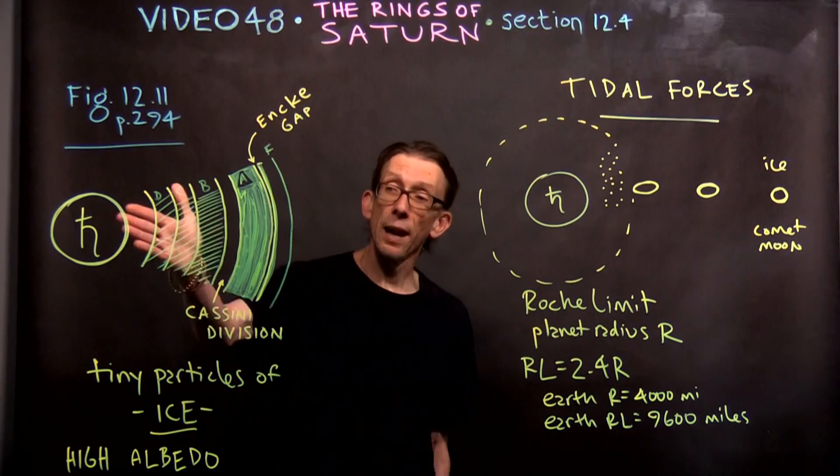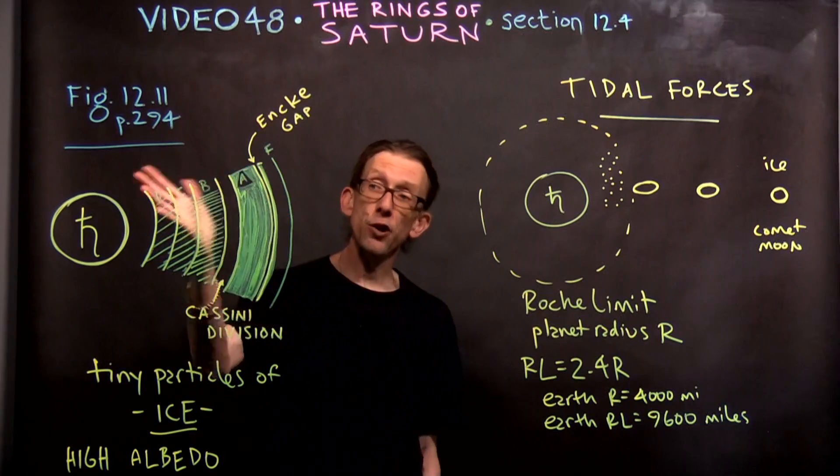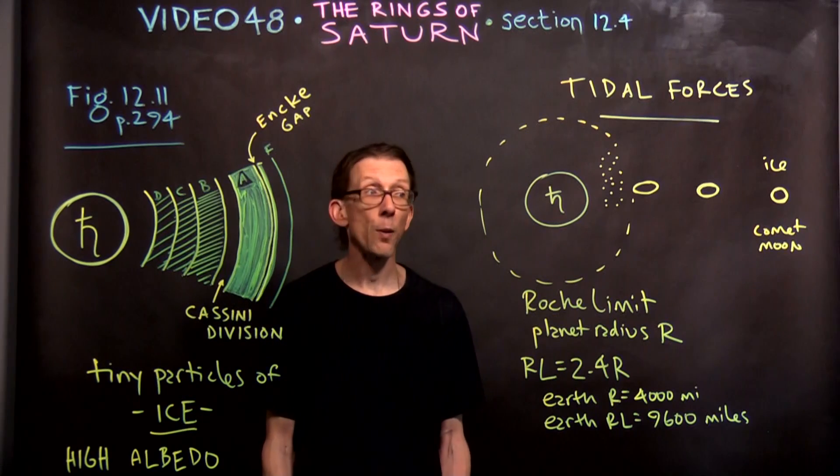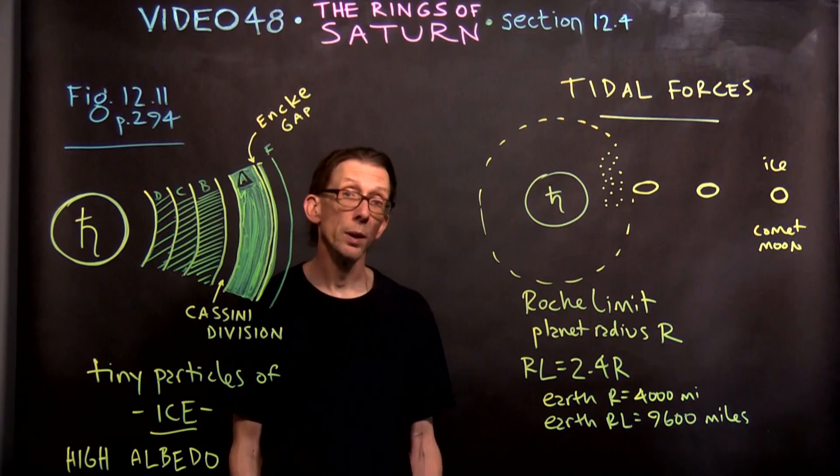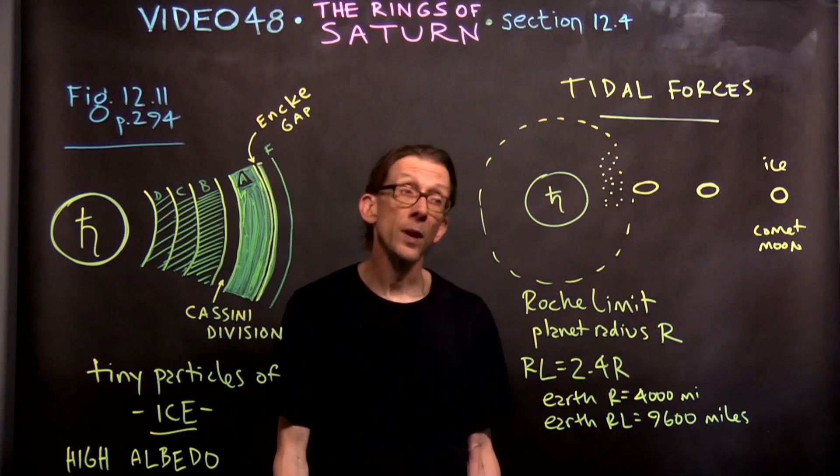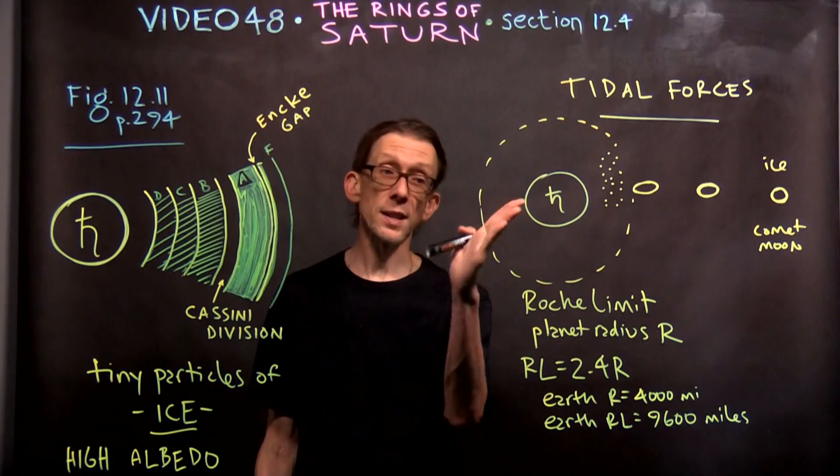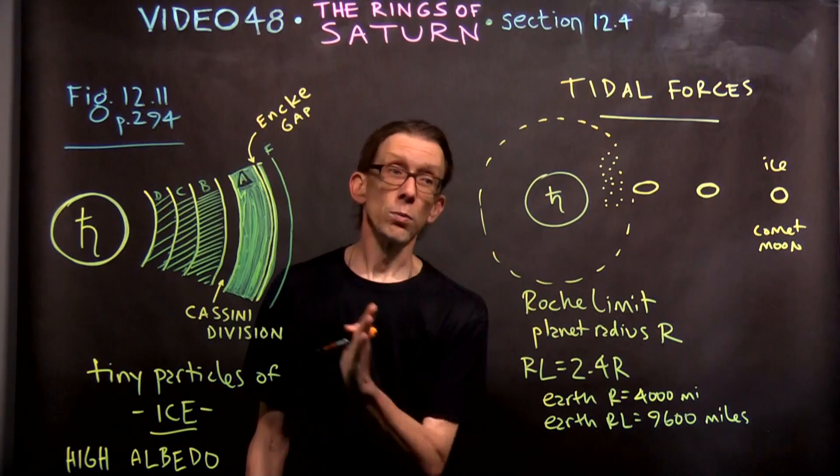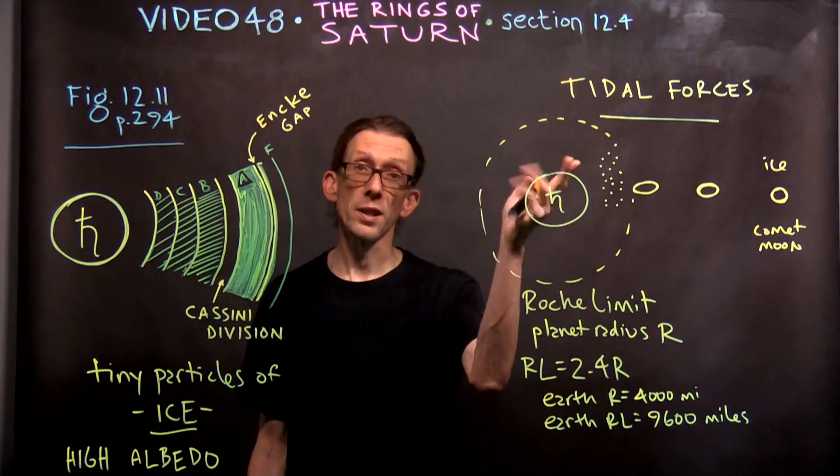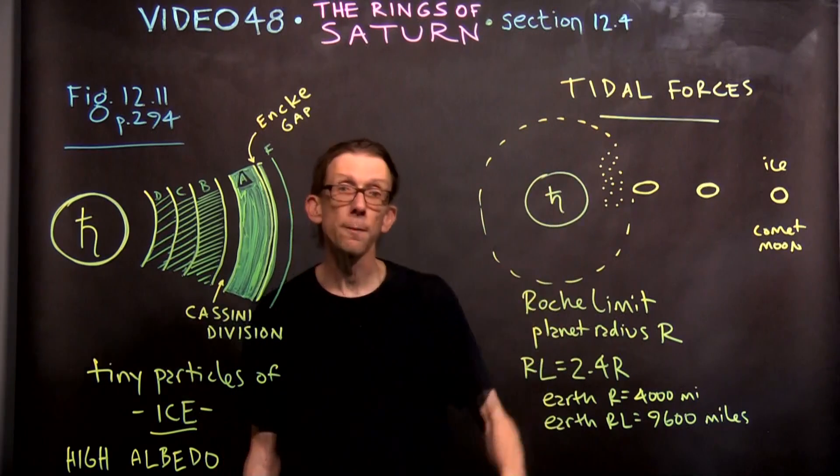But the point is that ice bodies like comets or moons being shattered by tidal forces is not uncommon. And we believe that the most likely explanation for the source of Saturn's rings was some event like that where an ice comet or moon, an icy comet or moon, was shattered by Saturn's gravity. And maybe was not falling straight into Saturn, but maybe was coming in at an angle. And so its pieces didn't fall straight into Saturn, but ended up orbiting around it.